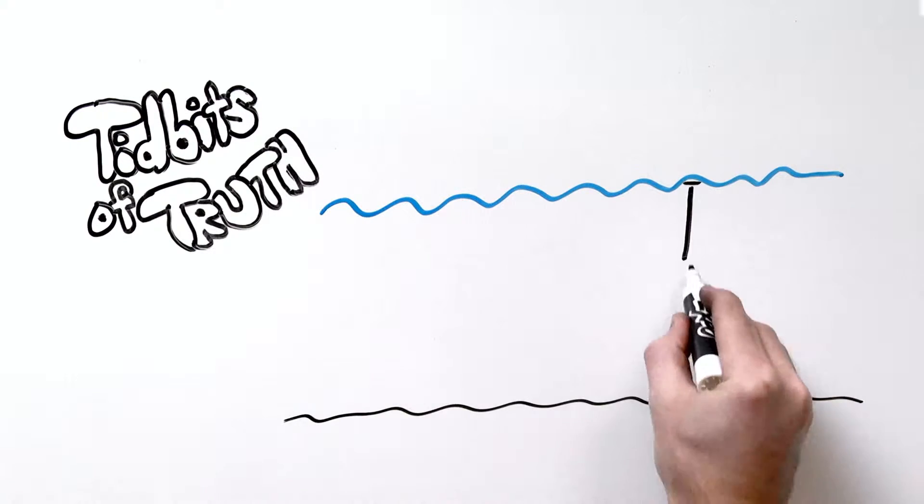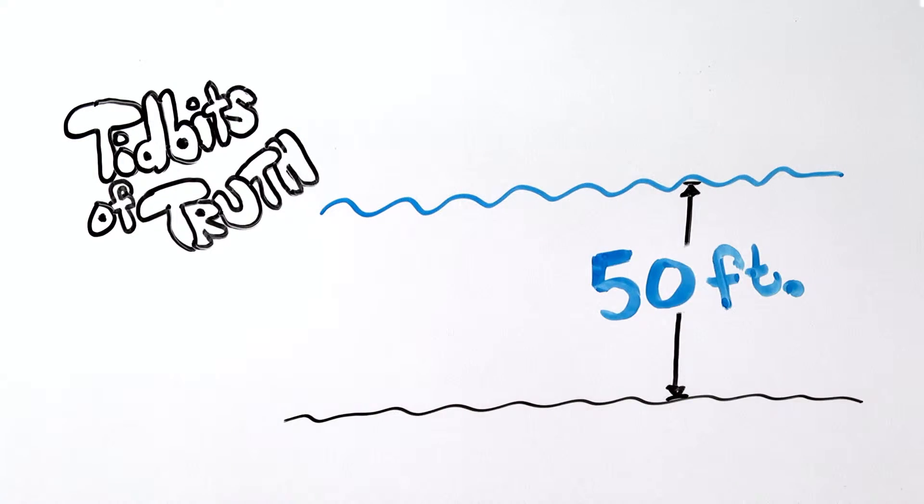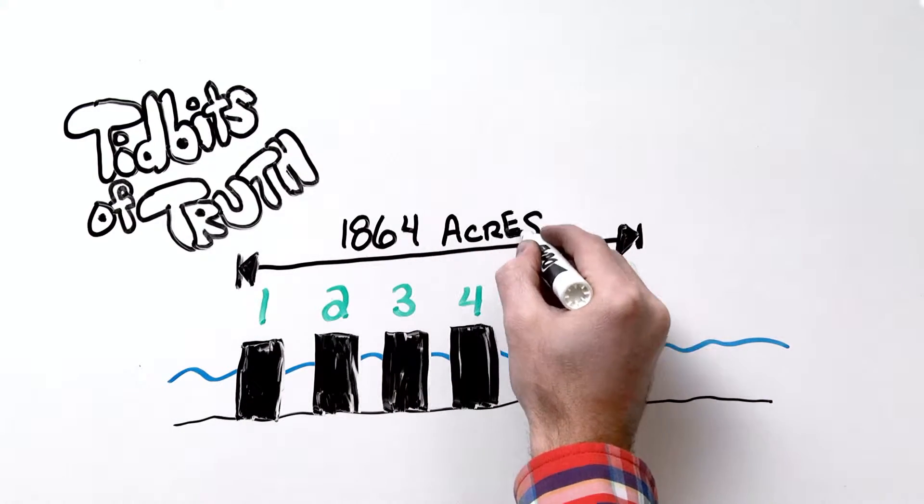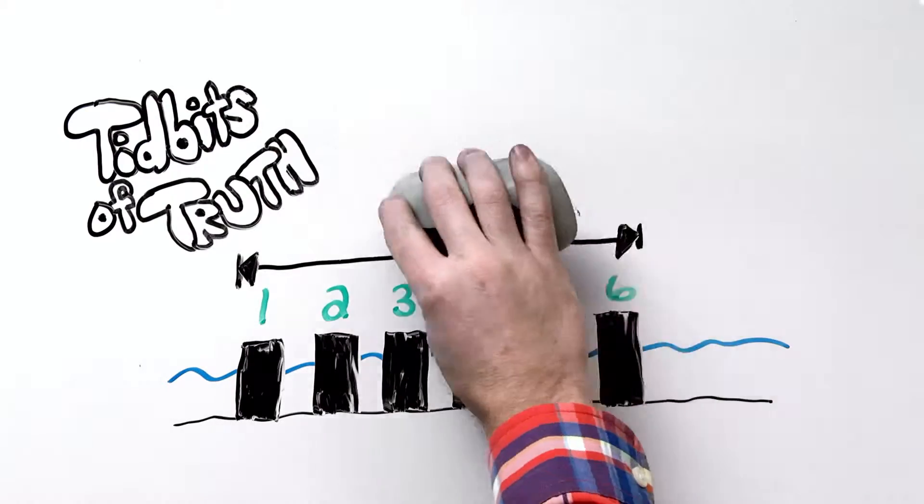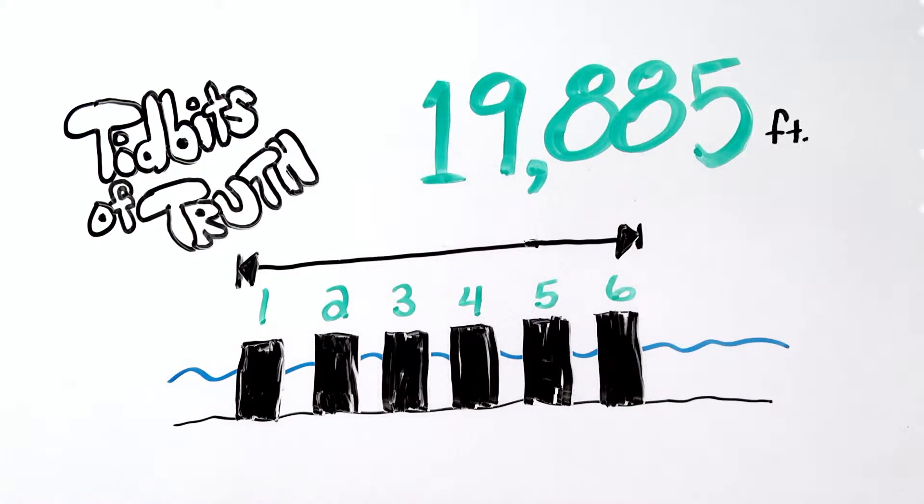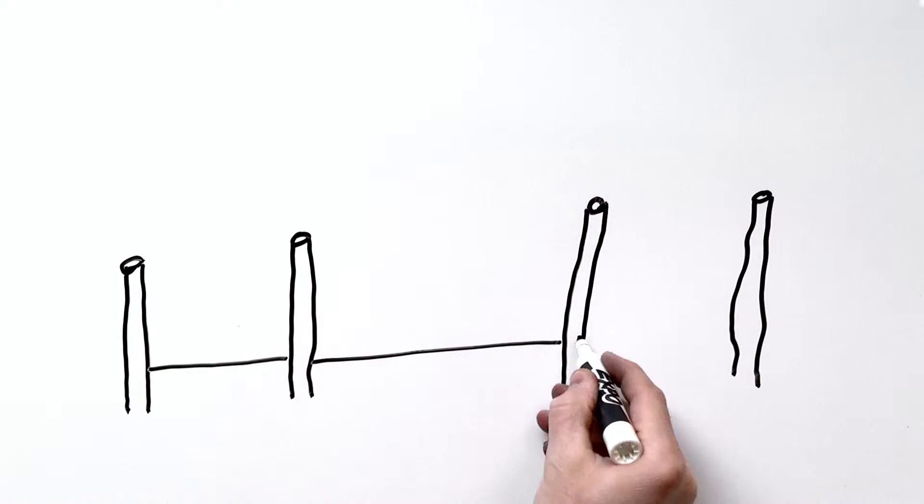We are talking a whopping 19,885 linear feet of berth. Okay, let's put all that into perspective. There is so much dock space in Norfolk that it boasts 30 miles of on-dock rail.